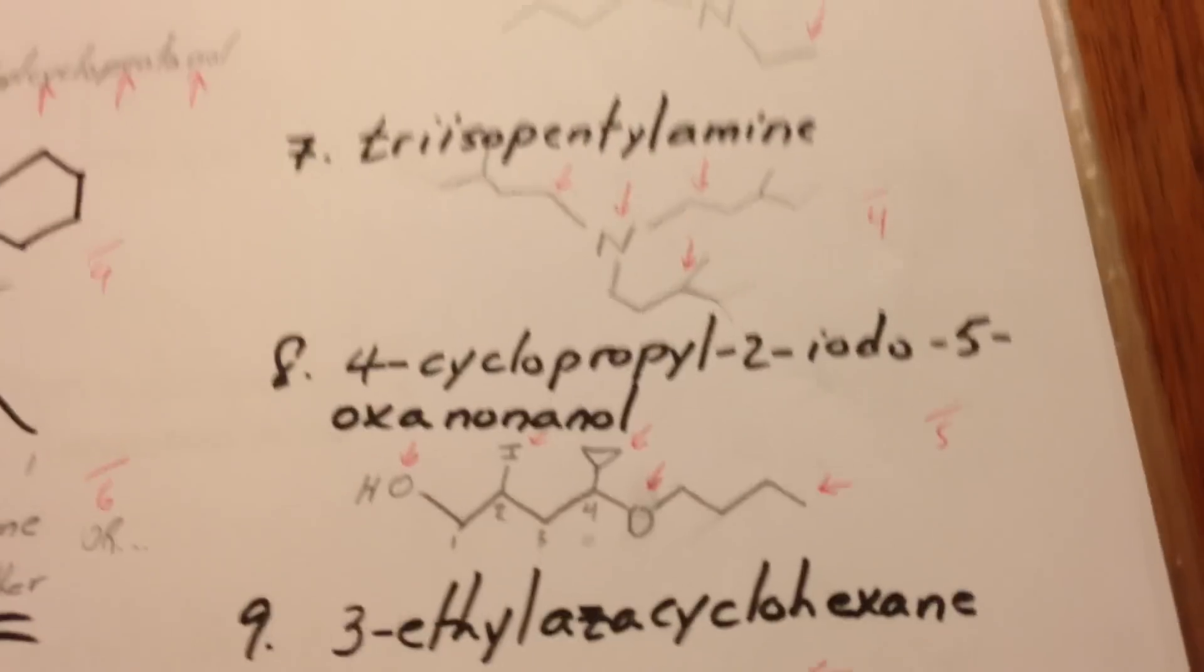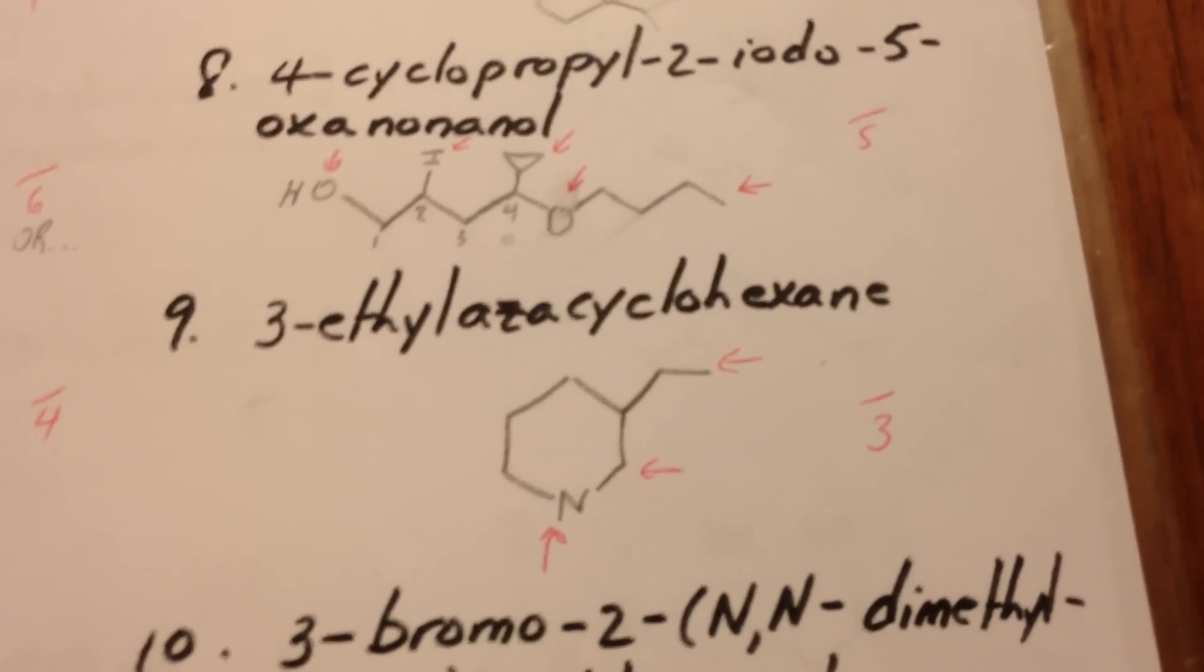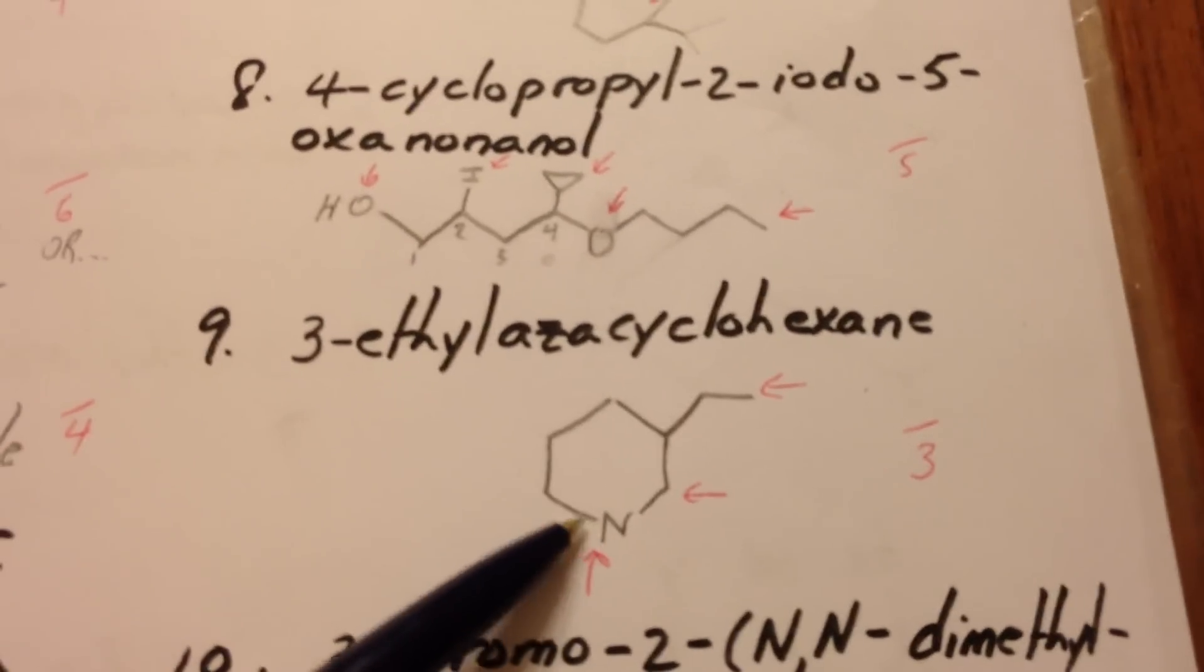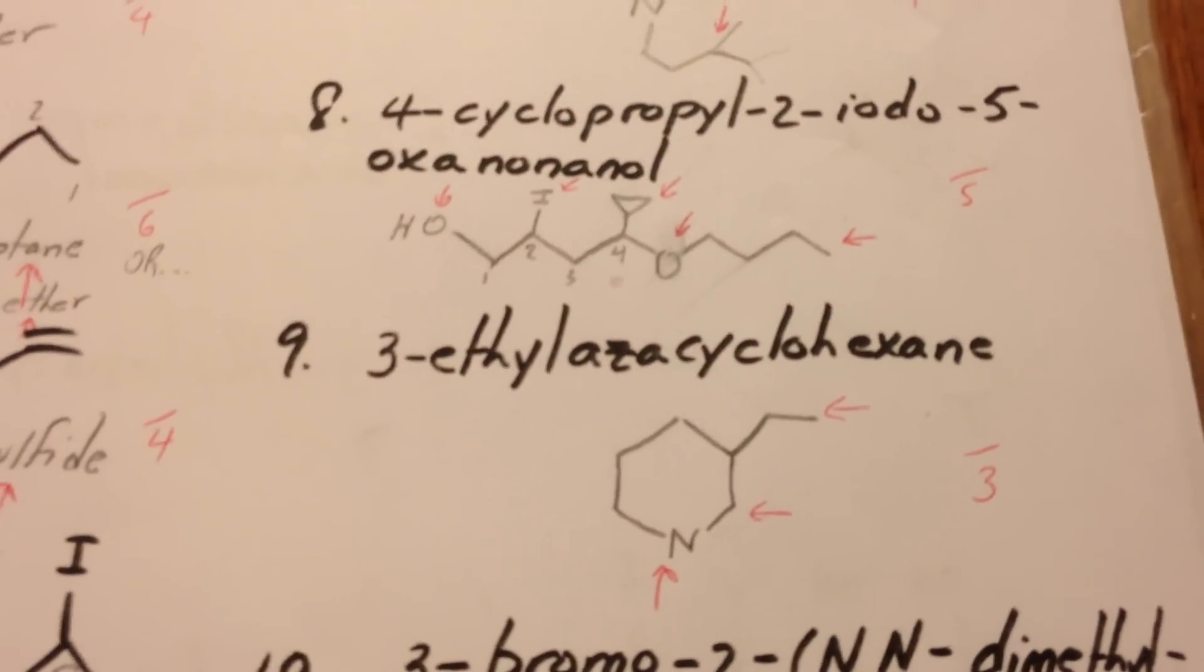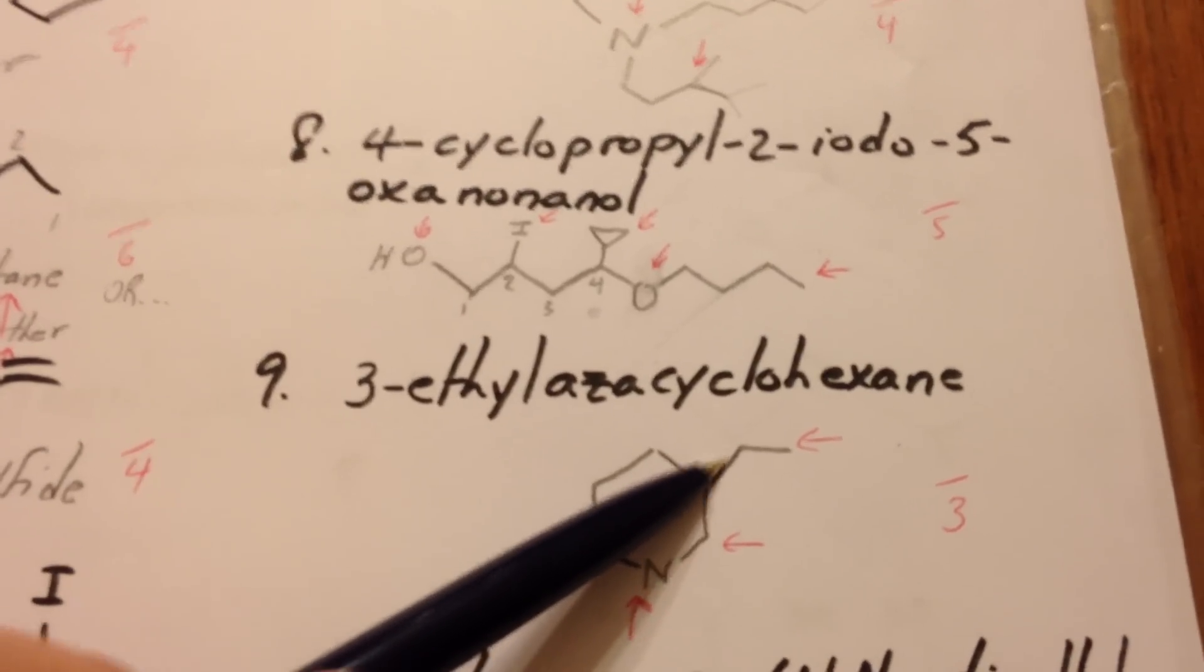The ninth molecule, that was worth, by the way, five marks. The ninth molecule is 3-ethyl-aza-cyclohexane. Aza is used when nitrogen atom is included in a ring. We start the numbering here. And at the third position, there's an ethyl group. So there's our ring with the ethyl at the third position.